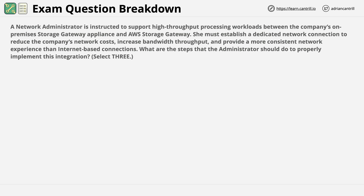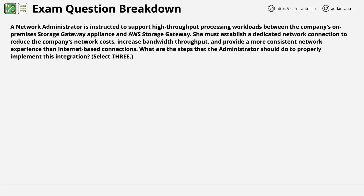Let's start by reading the question. A network administrator is instructed to support high-throughput processing workloads between the company's on-premises storage gateway appliance and AWS Storage Gateway. She must establish a dedicated network connection to reduce the company's network costs, increase bandwidth throughput, and provide a more consistent network experience than internet-based connections. What are the steps that the administrator should do to properly implement this integration?